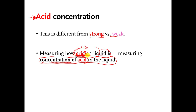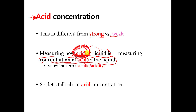We want you to know the difference between the words 'acidic' and 'acid.' Acid is a thing — it's a type of chemical. Acidic means how concentrated that thing is in a liquid. So in this video we're going to talk about acid concentration.